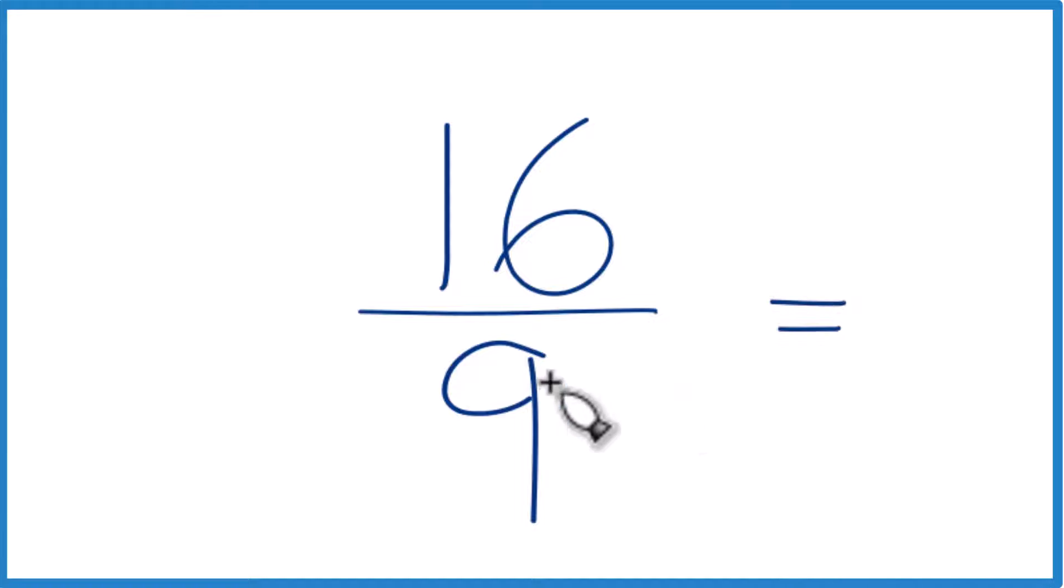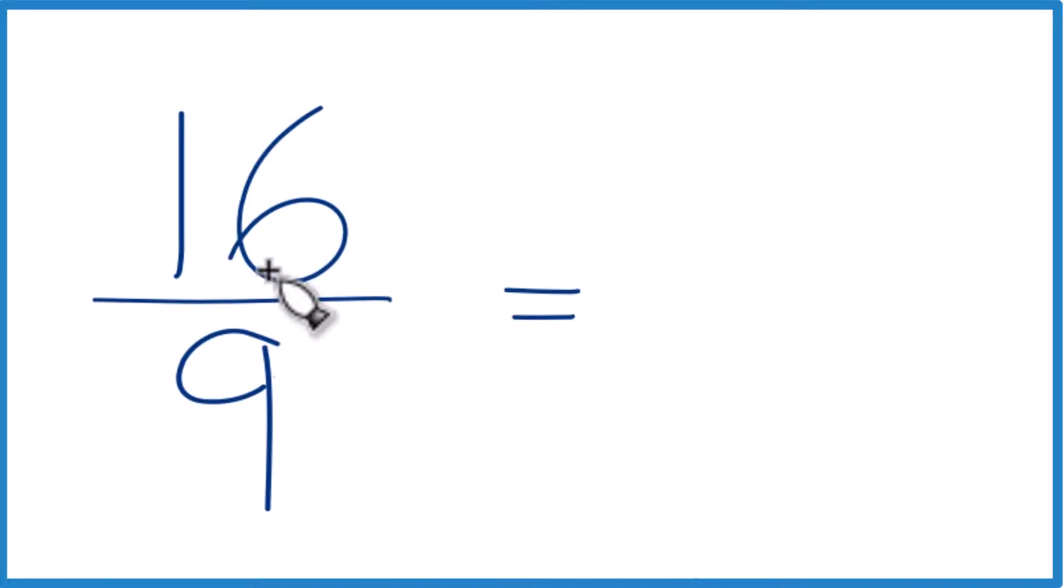9 goes into 16 just one time because 2 times 9 would be 18, which would be too much. So 1 times 9 is 9, and then we'd have 7 left over, which would become our numerator.